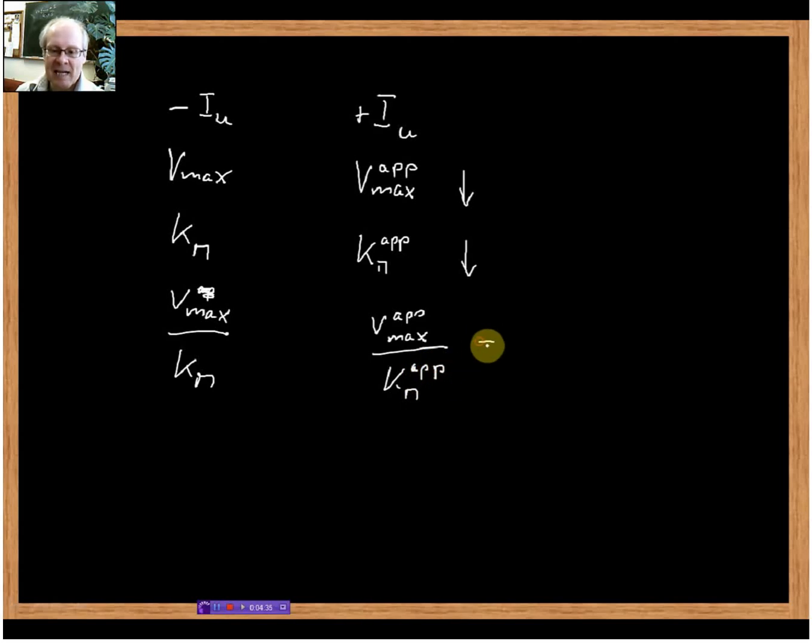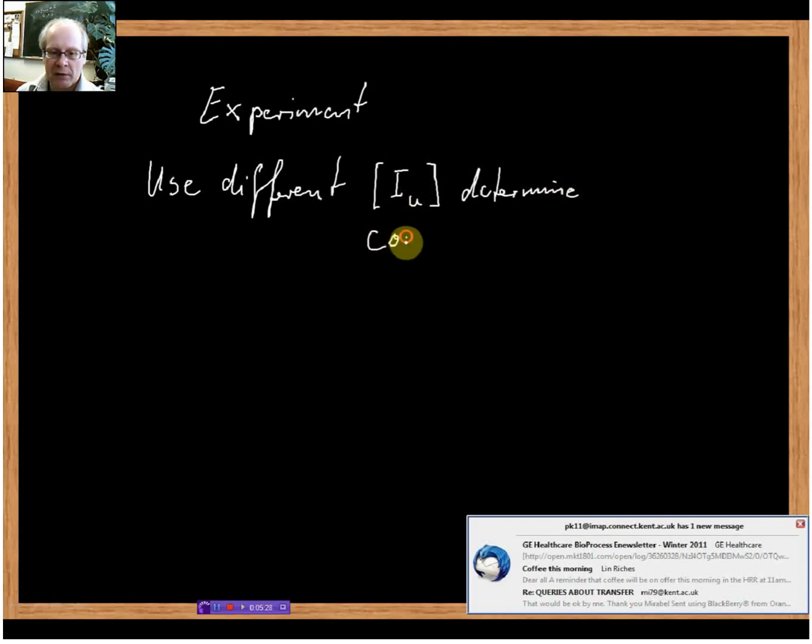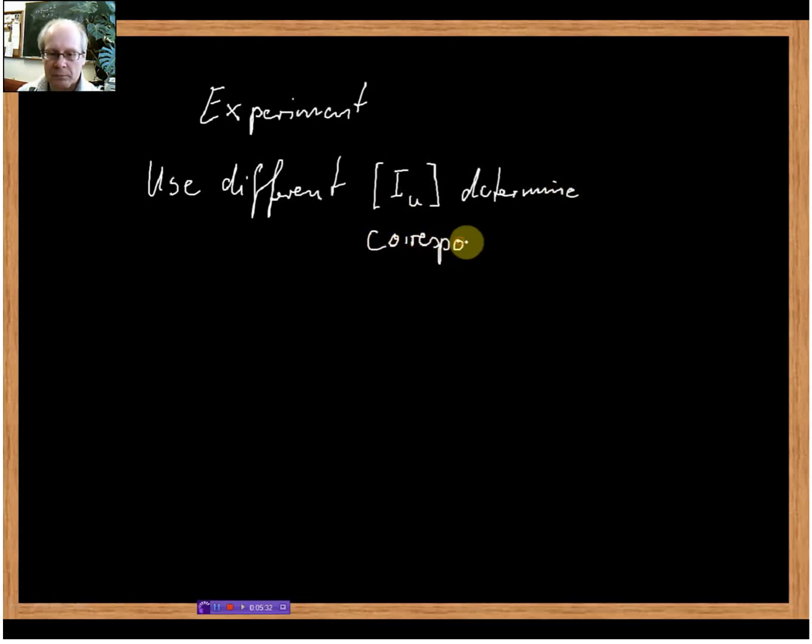What we can do is use different inhibitor concentrations and measure the corresponding Vmax apparent. The experimental approach would be: use different inhibitor concentrations and determine the corresponding Vmax apparent.